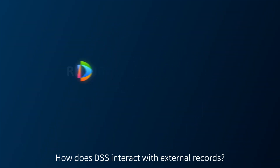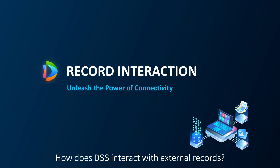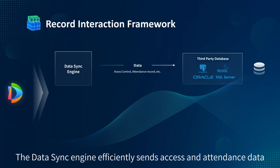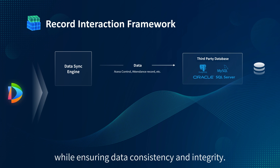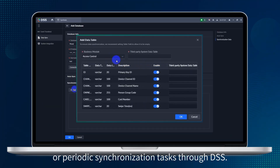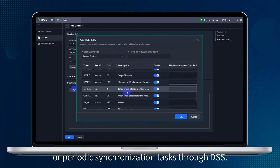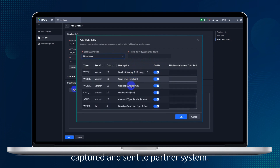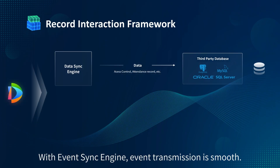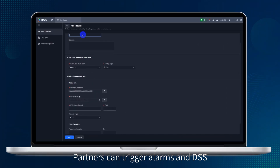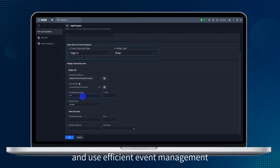How does DSS interact with external records? The Data Sync Engine efficiently sends access and attendance data while ensuring data consistency and integrity. Users can schedule real-time or periodic synchronization tasks through DSS, and changes in the database tables can also be captured and sent to partner systems. With the Event Sync Engine, event transmission is smooth, and partners can trigger alarms in DSS and use efficient event management and processing capabilities in the platform.